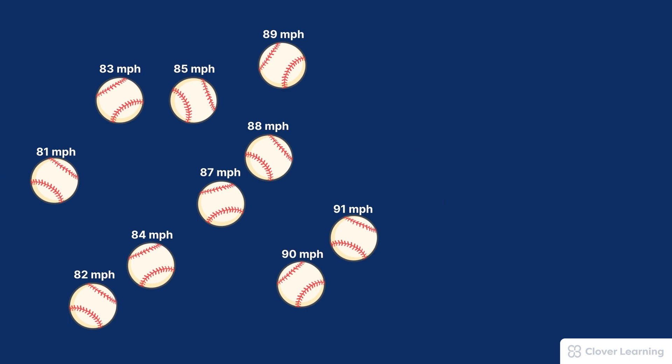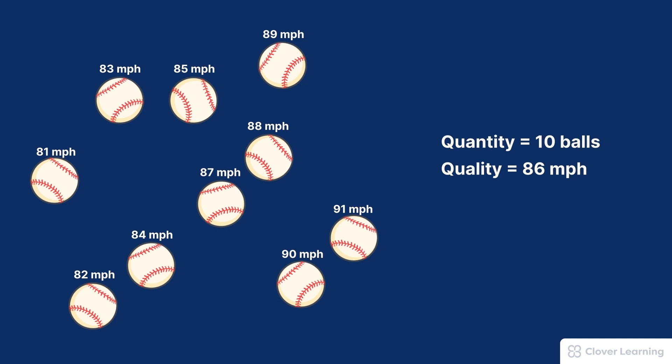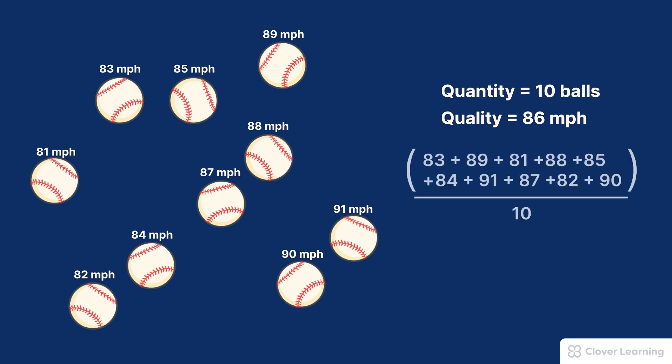Here's an example that's similar. Let's say a pitcher throws 10 pitches during one inning of a baseball game — that's the quantity, 10 balls. Each of these pitches came in at different velocities. Let's say the average velocity is 86 miles per hour; we would call this the quality. So the quantity is the total number of pitches, but the quality was their average velocity, calculated by adding all the velocities and dividing by the total number of baseballs.